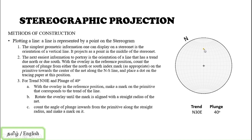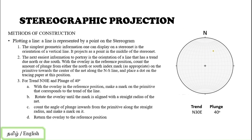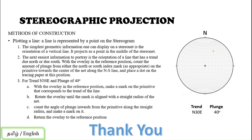Now return the overlay to its original position and you can see the final plot. This is how a lineation with trend N30°E and plunge of 40° is marked on a stereographic projection. If you have any doubts, mention them in the comment section and we will make a more detailed video. With this I am completing this class; we will meet for stereographic projection of planar features in the next video. Thank you.